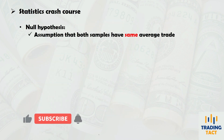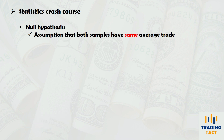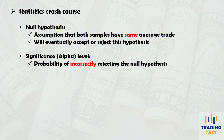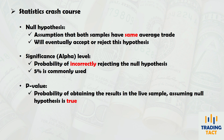Before running the test, let's introduce some essential statistical terms. The null hypothesis is an initial assumption which states that both sets of trading results have the same average trade. Depending on the test result, we will decide whether to accept or reject this hypothesis. The significance level, or alpha level, is the probability of incorrectly rejecting the null hypothesis — in our context, this means incorrectly deciding that the backtest and live results are different when they are actually similar. We will use a 5% probability. The p-value is the probability of obtaining the results in your live sample, assuming that the null hypothesis is true.